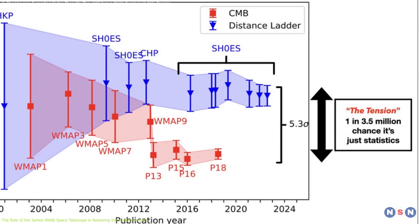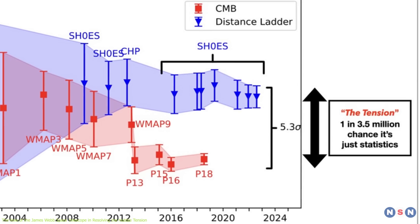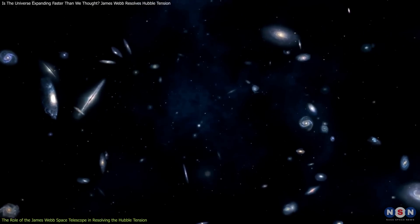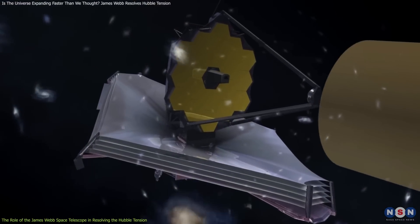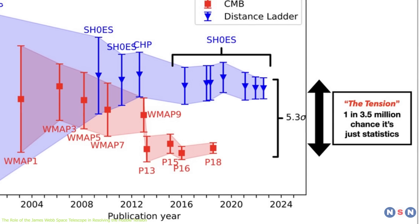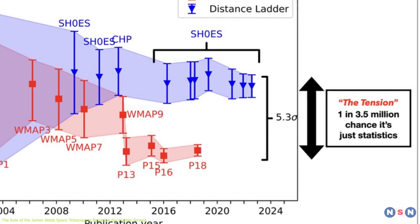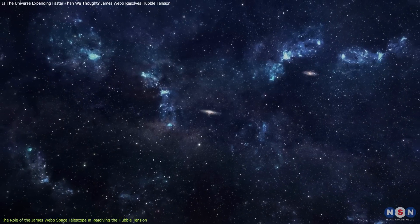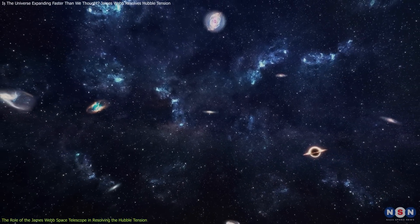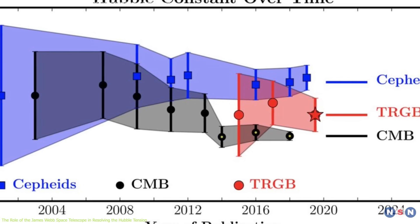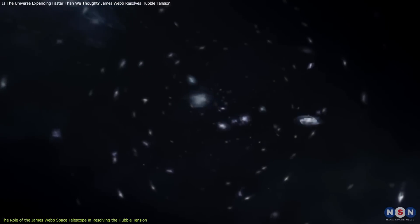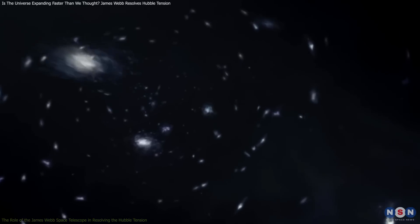This suggests that the discrepancy observed in previous measurements might be narrowing, potentially reducing the severity of the Hubble tension. If future observations continue to support the alignment of these different methods, it could indicate that the Hubble tension is not due to a fundamental flaw in our understanding of the universe, but rather a result of the challenges inherent in measuring such vast cosmic distances. However, if discrepancies persist, it might suggest that new physics or unknown cosmic phenomena are influencing the universe's expansion.